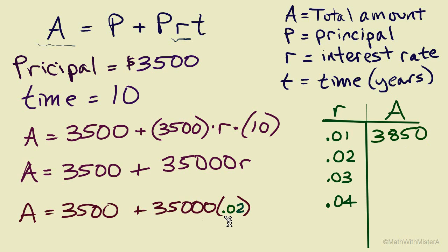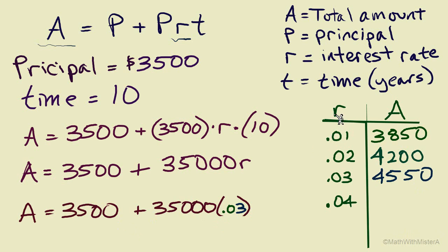When the interest rate is 2%, 0.02 times 35,000 equals $700. $700 plus $3,500 equals $4,200. For a 3% interest rate, 35,000 times 0.03 equals $1,050, added to $3,500 equals $4,550. We see a direct relationship between interest rate and amount: as the interest rate increases, so does the final amount — just as we saw a direct relationship with time. For a 4% interest rate, the total would be $4,900.